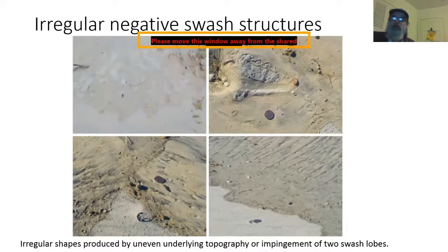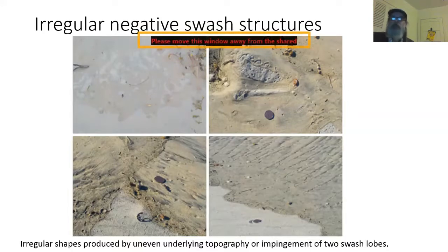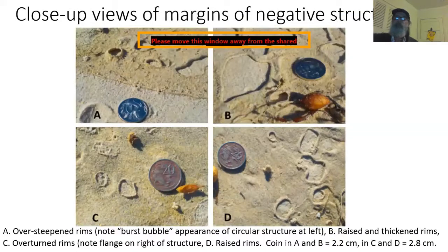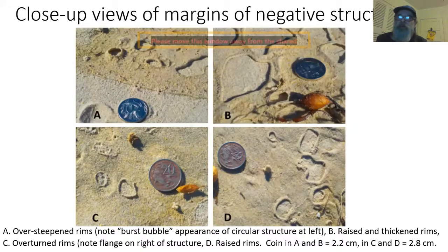They can have quite a range of morphologies, from subcircular to ellipsoidal, elongate, irregular, to linear arrays of ellipsoids. The irregularly shaped ones are produced either by uneven underlying topography — the one in the upper right is on a bit of a mound in the underlying sediment — or where you get impingement of two swash zones. In the lower left, you can see two swash lobes meeting on a beach cusp, impinging upon each other and leaving irregular structures. Close-up views of the margins show how steep their sides can be, and in some cases an overturned rim.